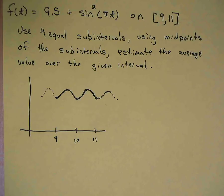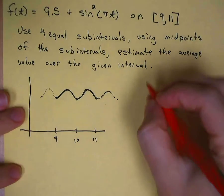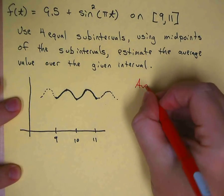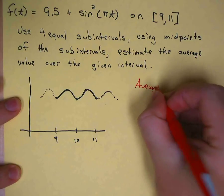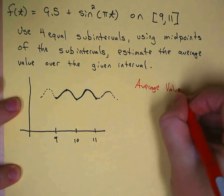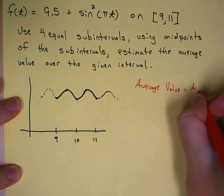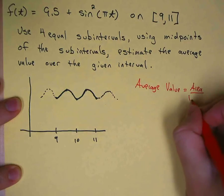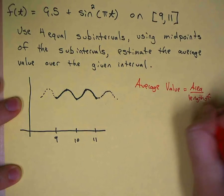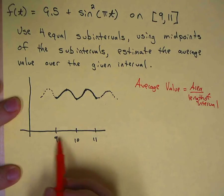Keep in mind that average value is equal to area over length of interval. The length of the interval here is 9 to 11, so that's 2. That's the easy part.